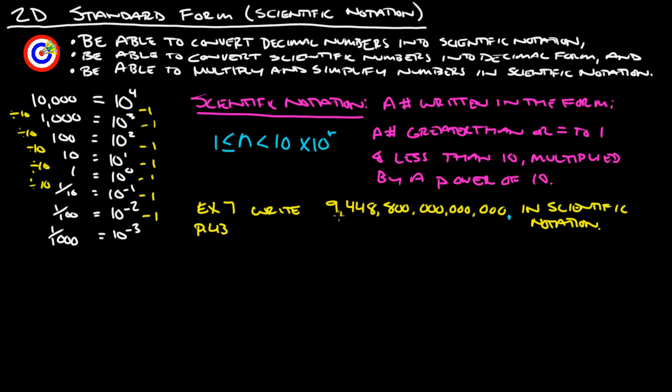We have to write it so that the first number here is just a single digit. This is where we want the decimal to be, right here. Let's figure out how far we have to move it back. That's 1, 2, 3, 4, 5, 6, 7, 8, 9, 10, 11, 12, 13, 14, 15 spots that we have to move that back. So we would then simply write it as 9.4488 times 10 to the 15th, since we moved it to the left. We made this really big number into a small number, so to compensate, we have to write this as a positive power, 10 to the 15th.